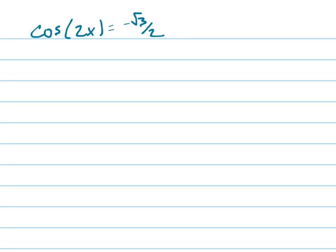Here's an example where it says solve for the cosine of 2x equals negative root 3 over 2. Well, if it had said something like the cosine of u, or even the cosine of x equals negative root 3 over 2, that's easy.